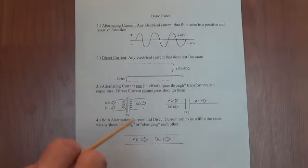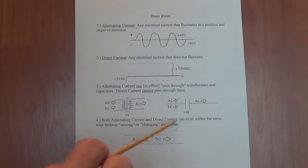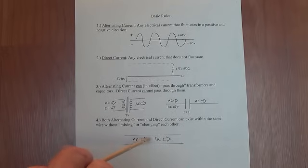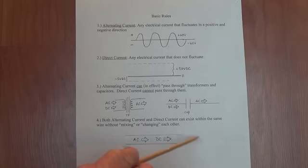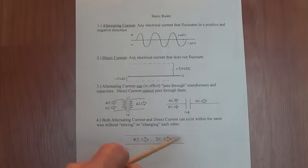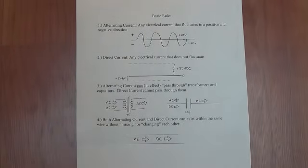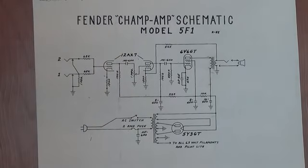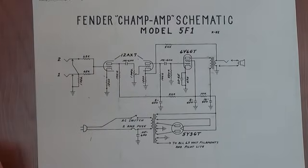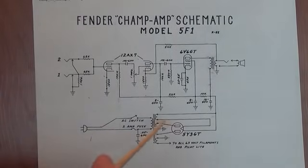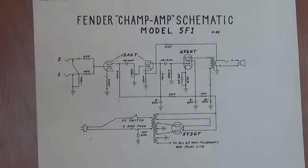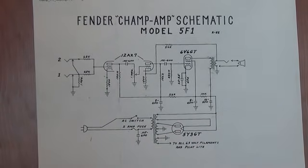And the fourth rule is that both alternating current and direct current can coexist within the same wire without really combining or changing each other. It's not like black and white are going to make gray. If you put alternating current and direct current into the same wire, they will come out just the same as they went in. So now using those rules, let's take a look at an amplifier schematic. And I'm going to break it down into little discrete chunks and describe each of those and then we'll put them all together and have an overall view of how the amplifier works.